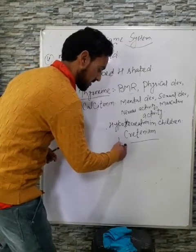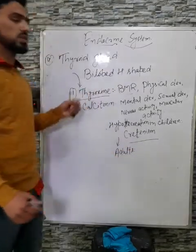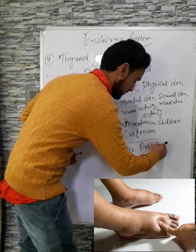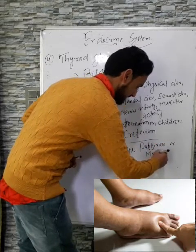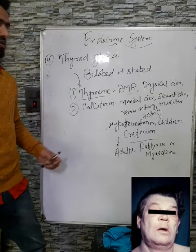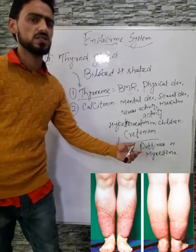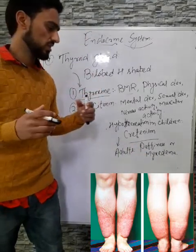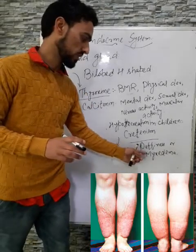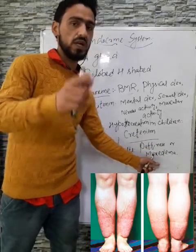If there is less secretion of thyroxine in adults, it results in another disorder known as myxedema, also called puffiness. The body becomes puffy, and that is why it is known as puffiness or myxedema — which you can see on screen.